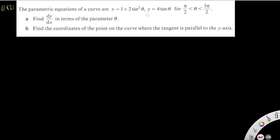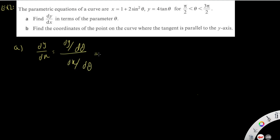Example two: the parametric equations of a curve are x equals one plus two sin²θ and y equals four tan θ, where θ is between π/2 and 3π/2. Part a — find dy/dx in terms of the parameter θ. Since y and x are both defined in terms of θ, we differentiate each with respect to θ.